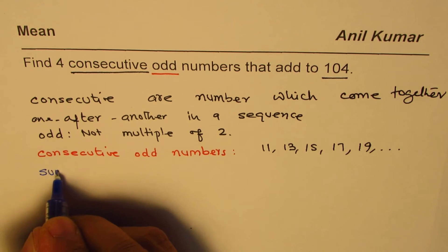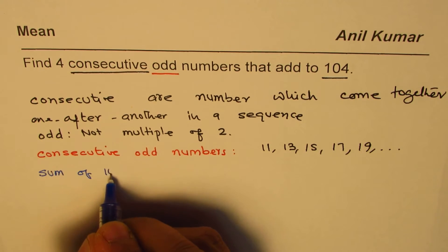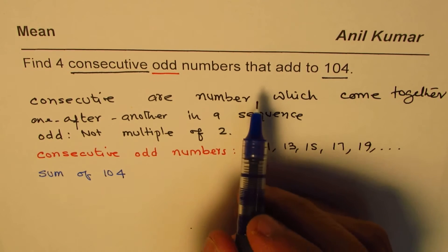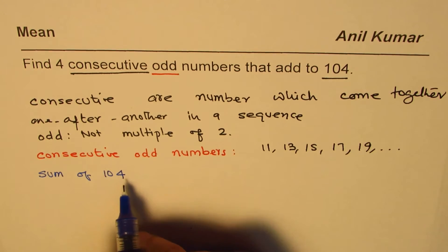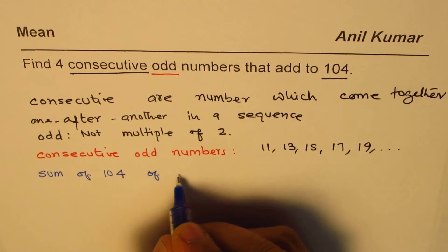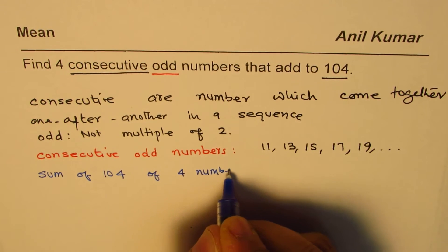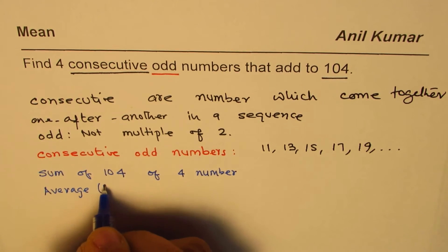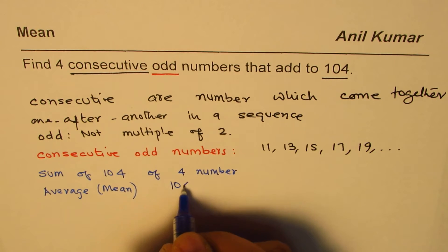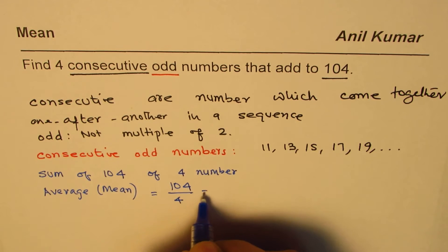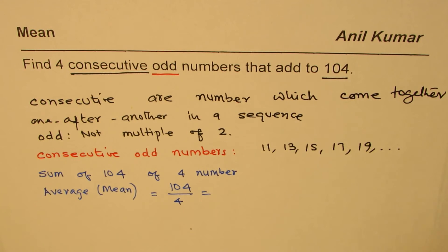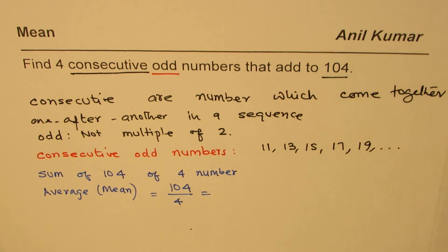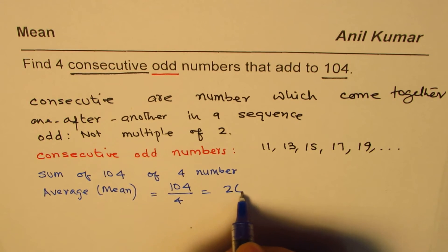Okay, let's try to think over it. We need sum of 104 of four numbers. That means what should be the mean or average? Mean will be 104 divided by four. So let's do it: 104 divided by 4 equals 26.